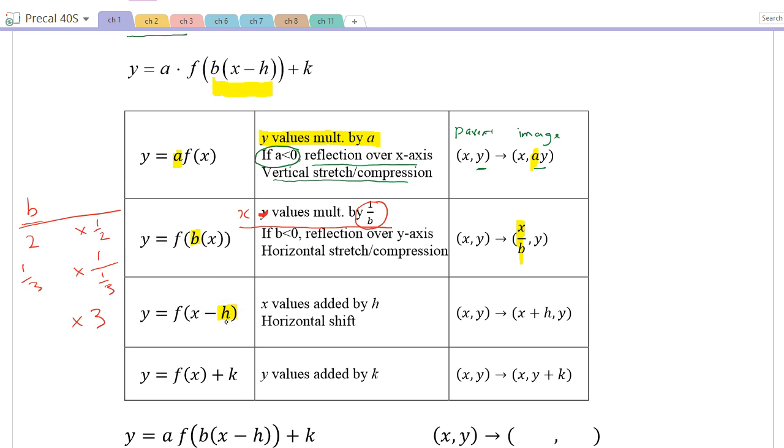The next one is the h value. And again, it's inside the function, so two things. It's related to x, and also it has sort of that opposite effect. So remember, whenever you see the h value, if it's x plus 2, h is minus 2. If it's x minus 2, then h is 2. So it has that opposite effect. And here's how we could map it. We could say, take your x values and add h to it.